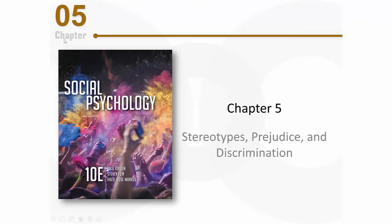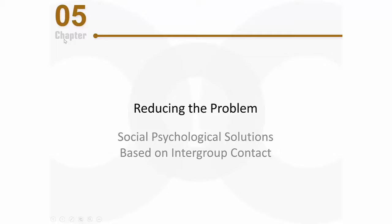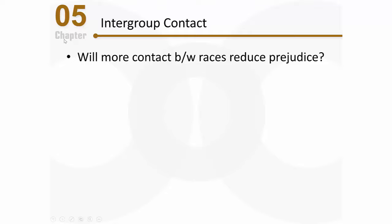Let's continue talking about stereotypes, prejudice, and discrimination, but let's focus on some ways that we can reduce these problems. Specifically, we'll talk about some social psychological solutions that are based on intergroup contact. When we talk about intergroup contact, we're focusing on one key question: will more contact between racial groups reduce prejudice between those groups?